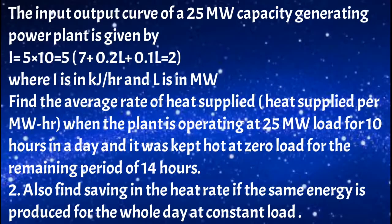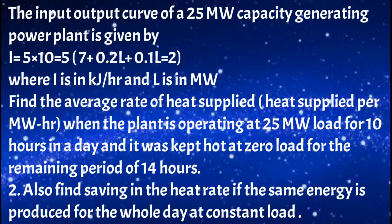The input-output curve of a 25 megawatt capacity generating power plant is given by I = 5 × 10^6 × (7 + 0.2L + 0.1L²), where I is in kilojoule per hour and L is in megawatt. Find the average heat rate when the plant is operating at 25 megawatt load for 10 hours and kept hot at zero load for the remaining 14 hours. Also find the saving in heat rate if the same energy is produced for the whole day at constant load.